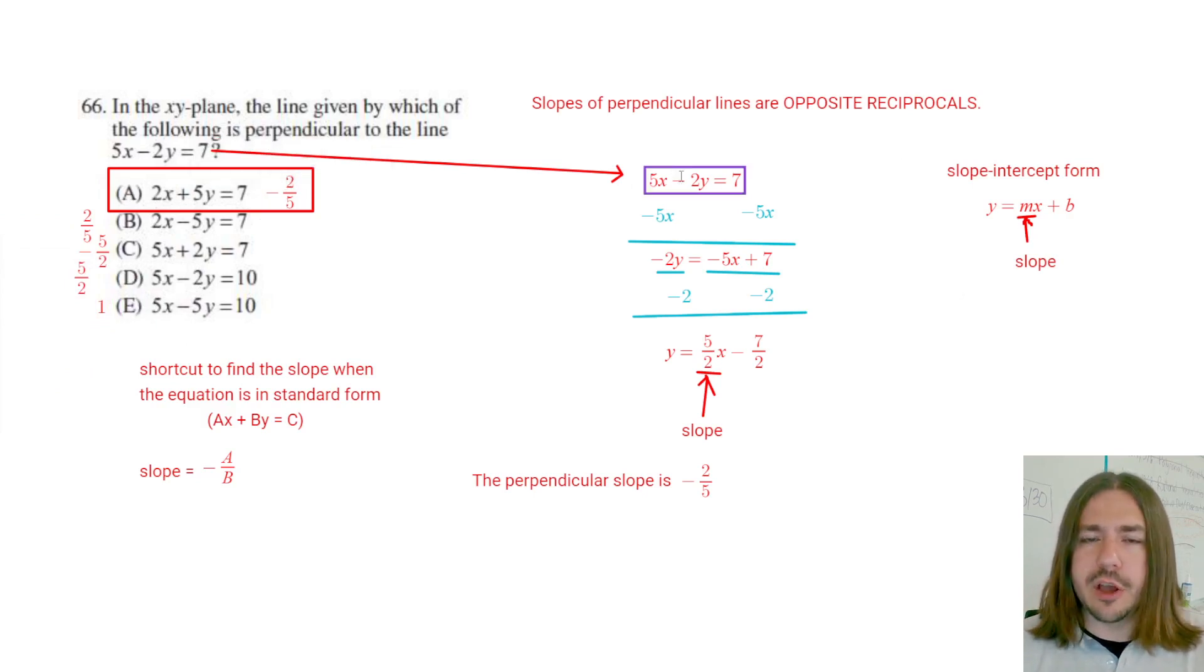You do want to be able to go from standard to slope intercept form to find the original slope and just have a good idea of why this little formula works. But if you know this formula for standard form equations for finding the slope, that can be a little faster. So that's it for number 66. Thanks for watching, and y'all have a great day.